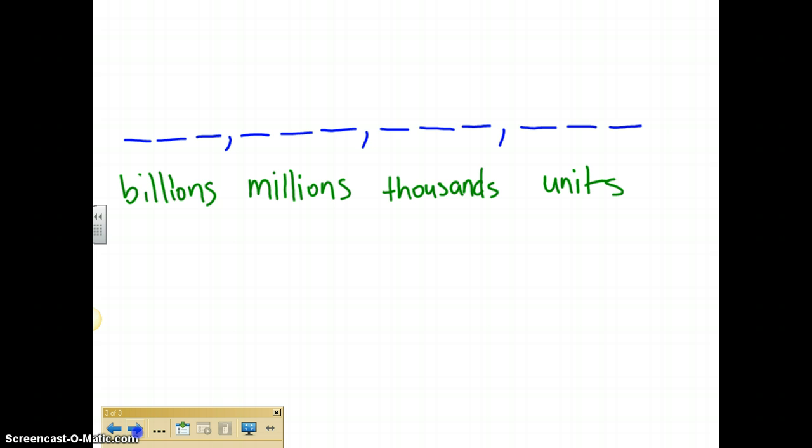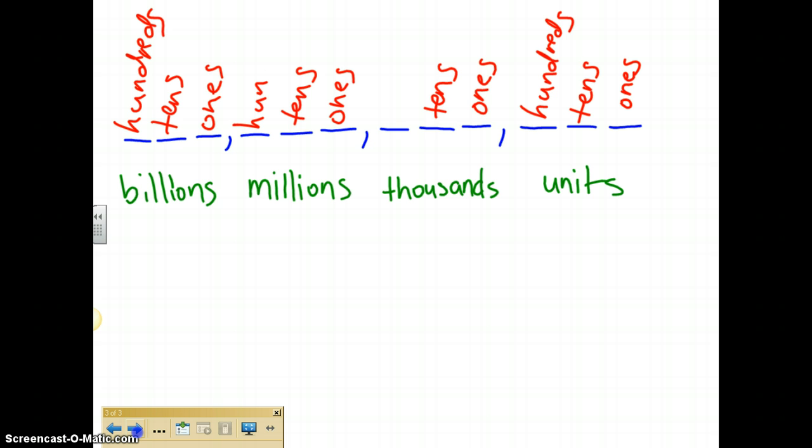So when you are reading a number, you read it with those names attached to it. Inside the family, each one of the spots has a different value. This first spot in every family is always the ones. No matter what family you're in, this first spot is always going to be classified as the ones. The middle one in every single family is going to be classified as the tens. And the third one in every single family will be classified as the hundreds.